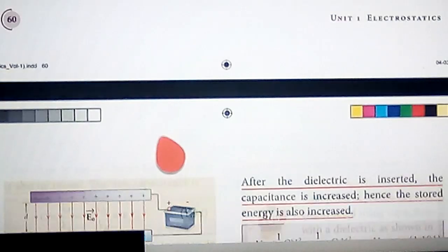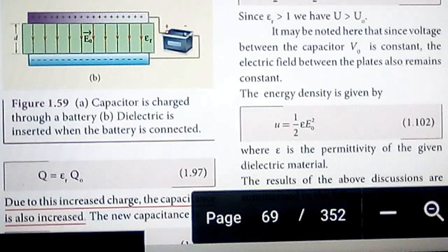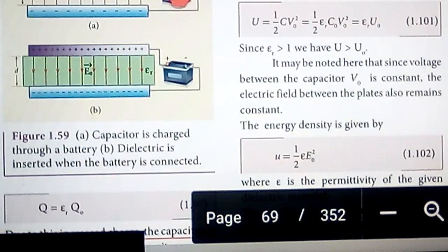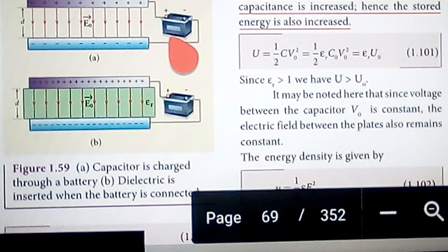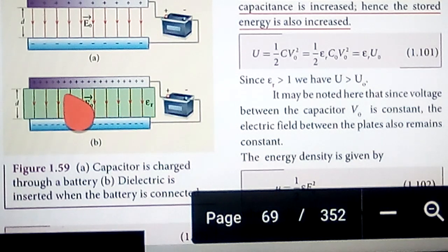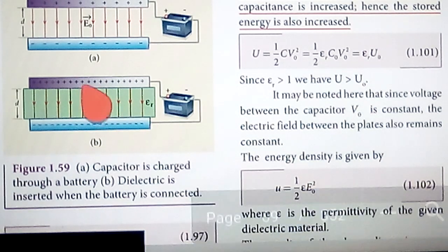Here, the parallel plate capacitor is connected to the battery and there is no dielectric initially. Now we are introducing the dielectric between the two plates while the battery remains connected.